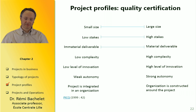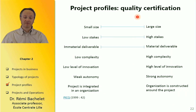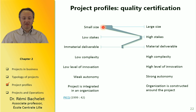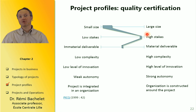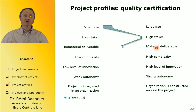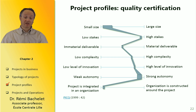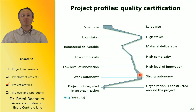Let's look at some examples. Here we have a project about getting a quality certification for products manufactured in a factory. In this case, the project will be small or medium in size. The stakes are very high because without the quality certification you will lose your customers. Deliverables are both immaterial and material — for example, you change working procedures (immaterial) and you also have to put in place new machines. And in this example the project team has a lot of autonomy.